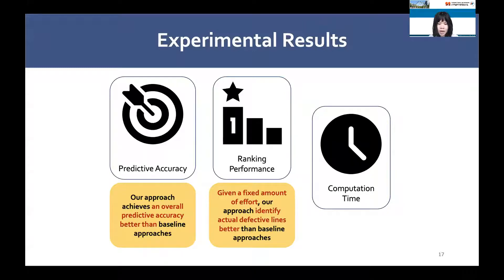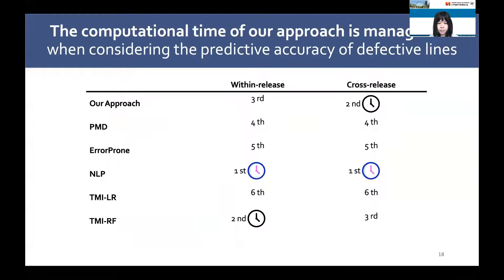Besides predictive accuracy and ranking performance, we also investigate the computational cost of identifying defective lines with our approach compared to other approaches. We find that NLP-based approaches take longer computation time than our approach. The additional computation time of our approach should still be manageable when considering the predictive accuracy of defective lines.